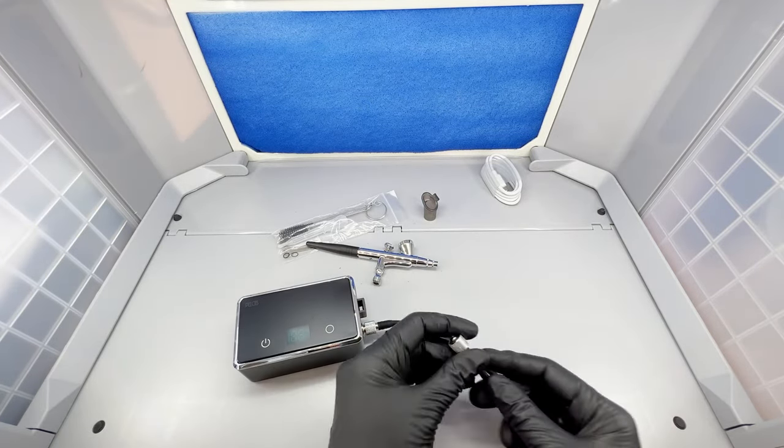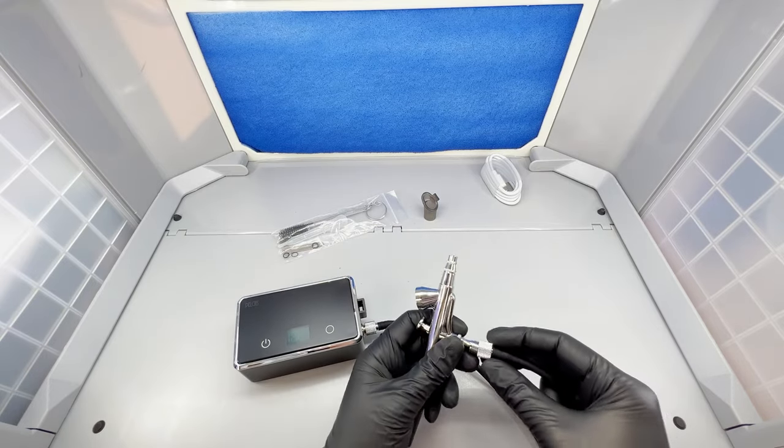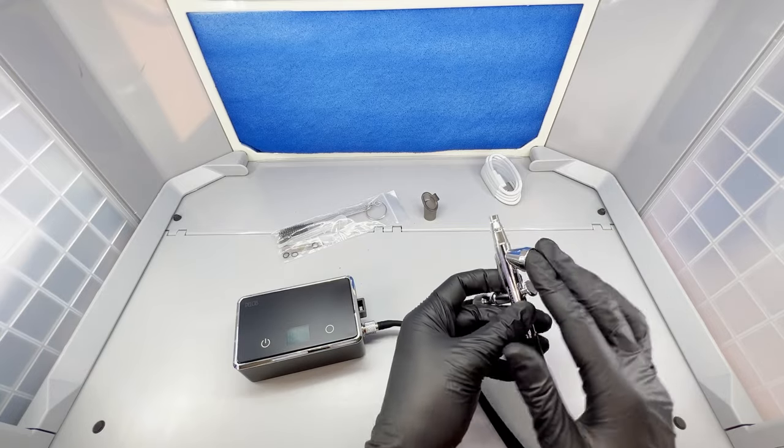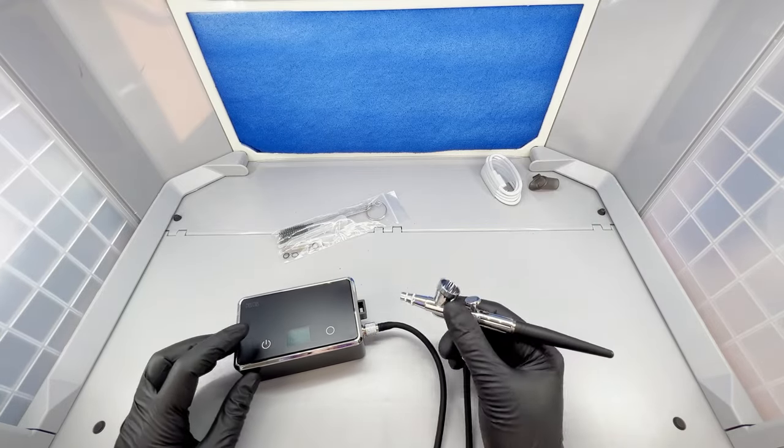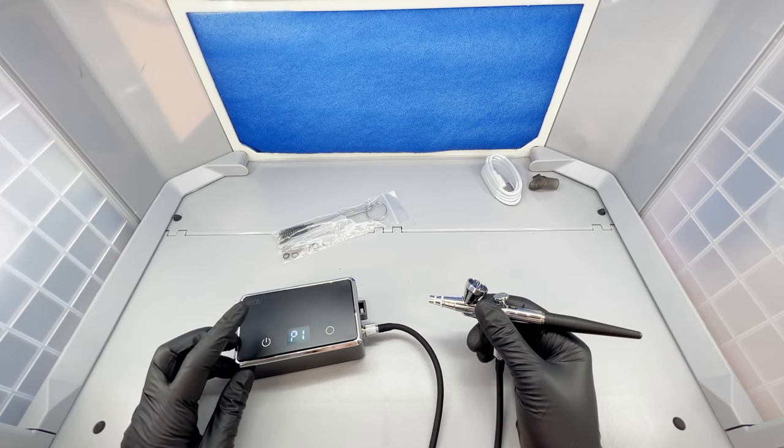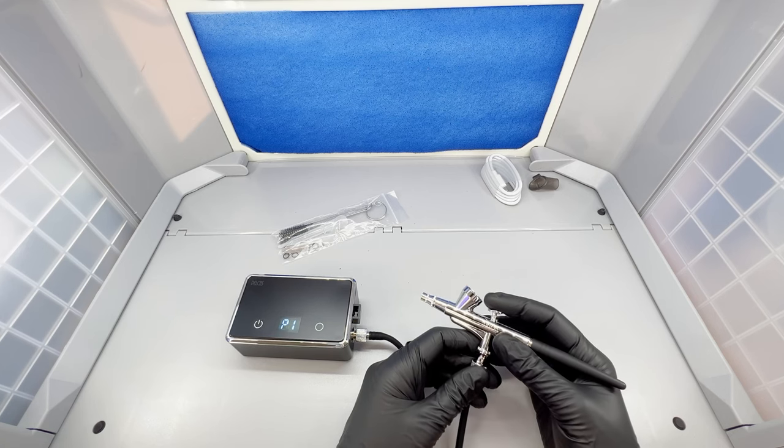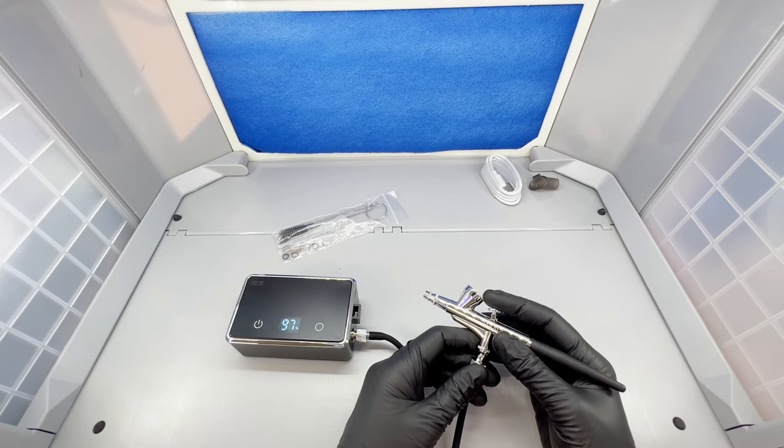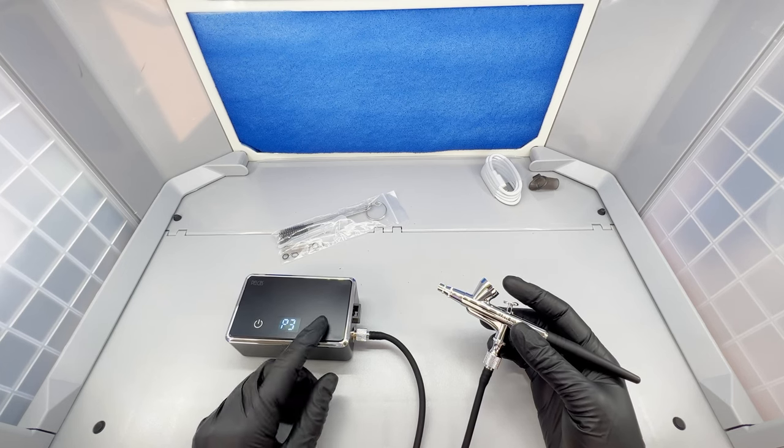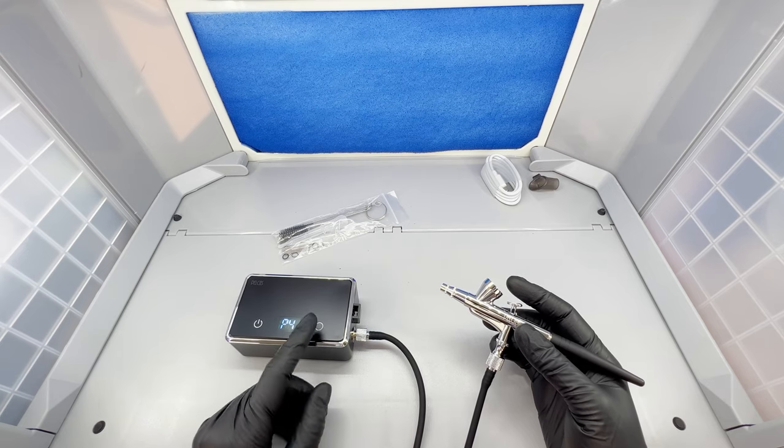Alright, we got this cord on here and on the machine. I guess it just blows air through there. It's pressurized, right? We've got P1, 2, 3, 4. Probably presets.